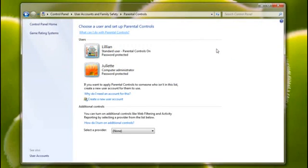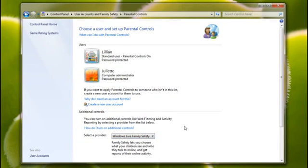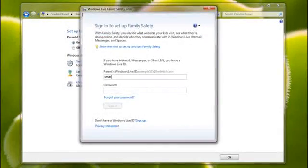To get started with Windows Live Family Safety, first open parental controls. Make sure Windows Live Family Safety is selected under additional controls. If you don't see it, then Family Safety isn't installed.